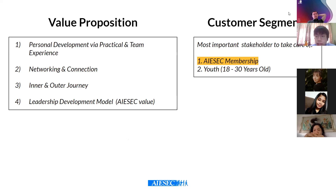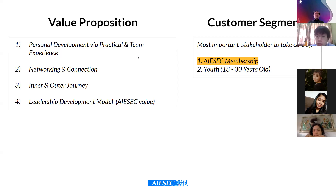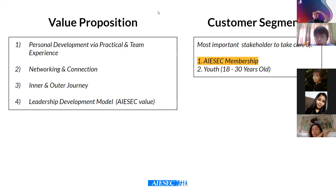We believe that if we take care of membership, it will actually impact all of the youth around us and even the companies and community around us as well. We put membership as the most important - not saying we don't care about the rest, but we prioritize membership as the most important stakeholder. For value proposition, we have four: first is personal development through practical and team experience; second is network and connection with different companies and people; third is the inner and outer journey - one-to-one, BDP, team experience, hard skills; and lastly, leadership development model - AIESEC Leads. These are the four unique value propositions that differentiate AIESEC from other organizations.